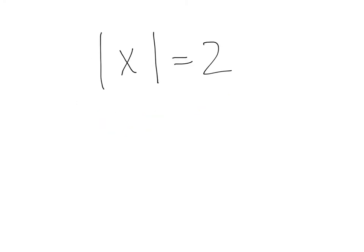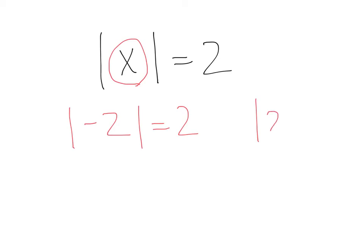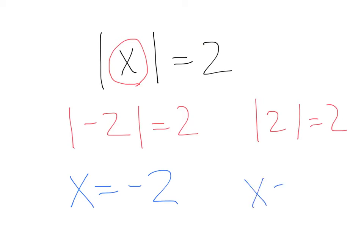Let's think back to when we had the absolute value of x equals two. We want to find what value of x will be two spaces from zero. We discovered that absolute value of negative two equals two, and also the absolute value of positive two equals two. So whenever we have an absolute value equation and want to solve, we take what's inside the absolute value — in this case x — and set it equal to both the negative and positive. This gives us x equals negative two and x equals positive two.